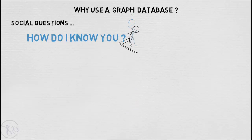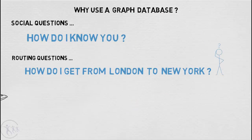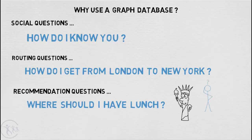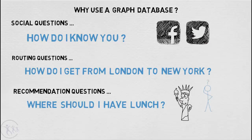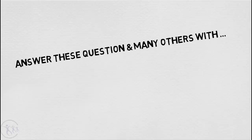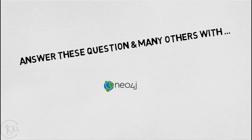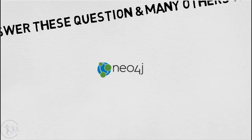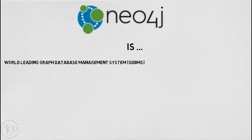How do I know you? How do I get from London to New York? Where should I have lunch? Normal everyday kinds of questions are excellent graph questions. Social, routing and recommendations are the kinds of questions behind vast corporations like Facebook, Google and Twitter. They have their own technology but you can use Neo4j. If you have data you have a graph and with Neo4j you have a tool that will answer the everyday questions which are really just a simple graph query.